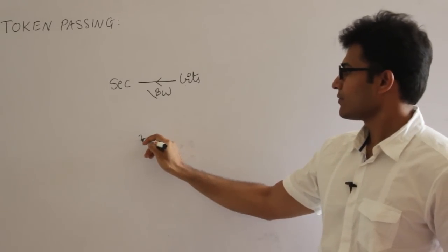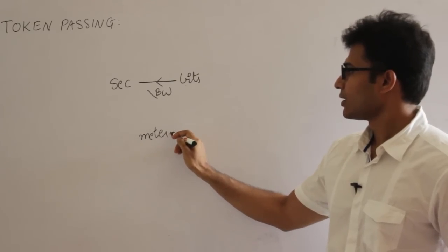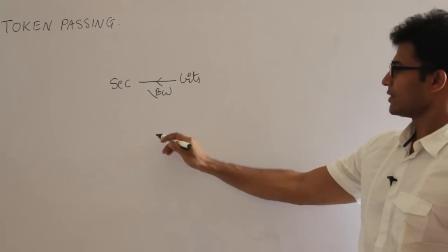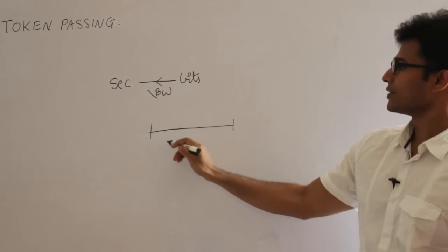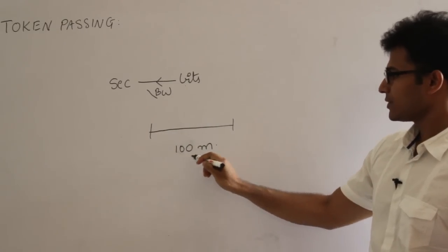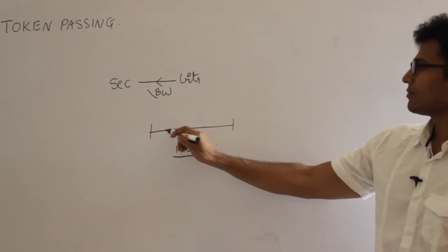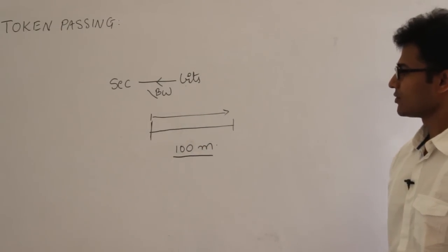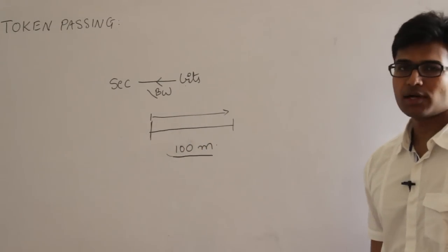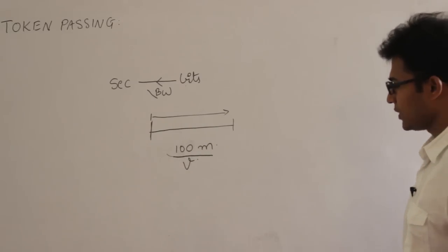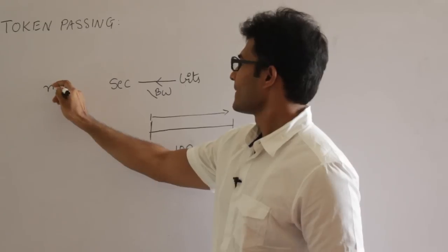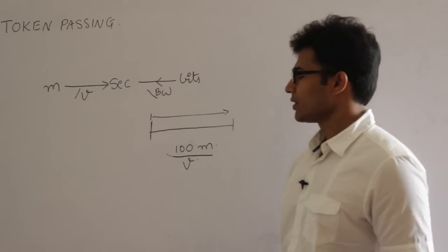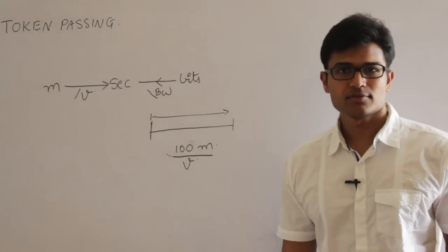Sometimes time will be given in meters. To convert time given in meters into seconds: if they say the propagation delay is 100 meters, it means the time taken for one signal to cross 100 meters. So given the time in meters, if you have to convert it into seconds, you have to divide it with velocity.